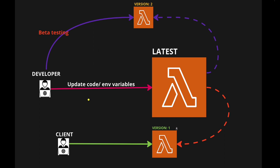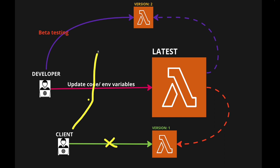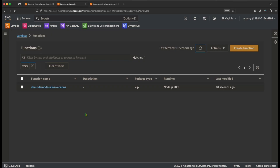Version 1 is not impacted because it does not have the new code changes. Once beta testing is done and successfully verified, the client can disconnect from version 1 and point to version 2. Furthermore, versions can be used for canary deployment with the support of aliases — some percentage of traffic goes to the new version and the rest to the old version, configured inside the alias.